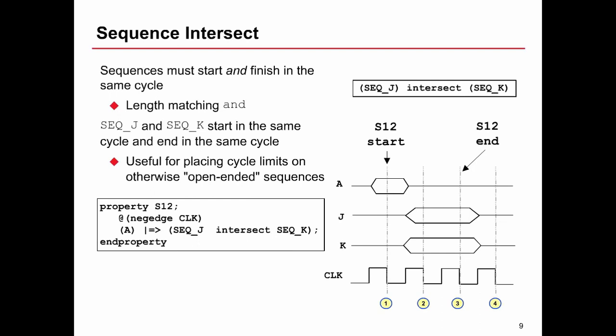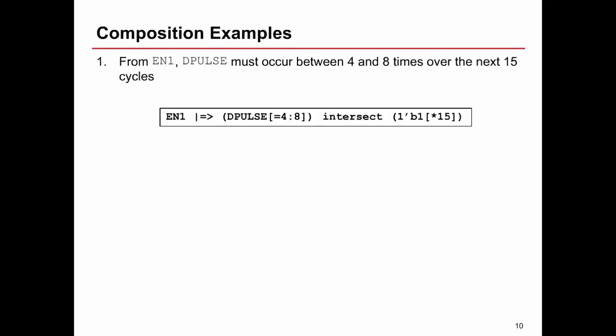Sequence INTERSECT defines two sequences in parallel where the sequences must start in the same cycle and also finish in the same cycle — for that reason it's called length matching. Given this assertion, if A occurs then on the next cycle both sequence J and sequence K must begin, and they must both finish on the same cycle. We can see from the diagram: A occurs at cycle one, on cycle two sequences J and K begin, and on cycle three both end — therefore the assertion passes at cycle three.